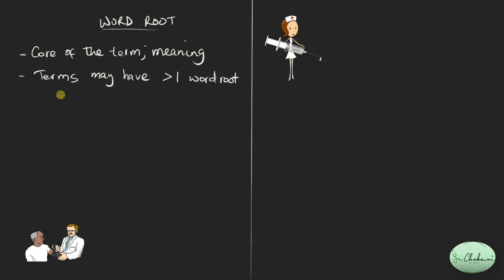An example of such a term is osteoarthritis, meaning inflammation of the joint and bone. Osteo means bone, arthro means joint — so osteo is one word root and arthro is another word root. Itis is the suffix. We'll understand this more once we go on to discuss word formation.